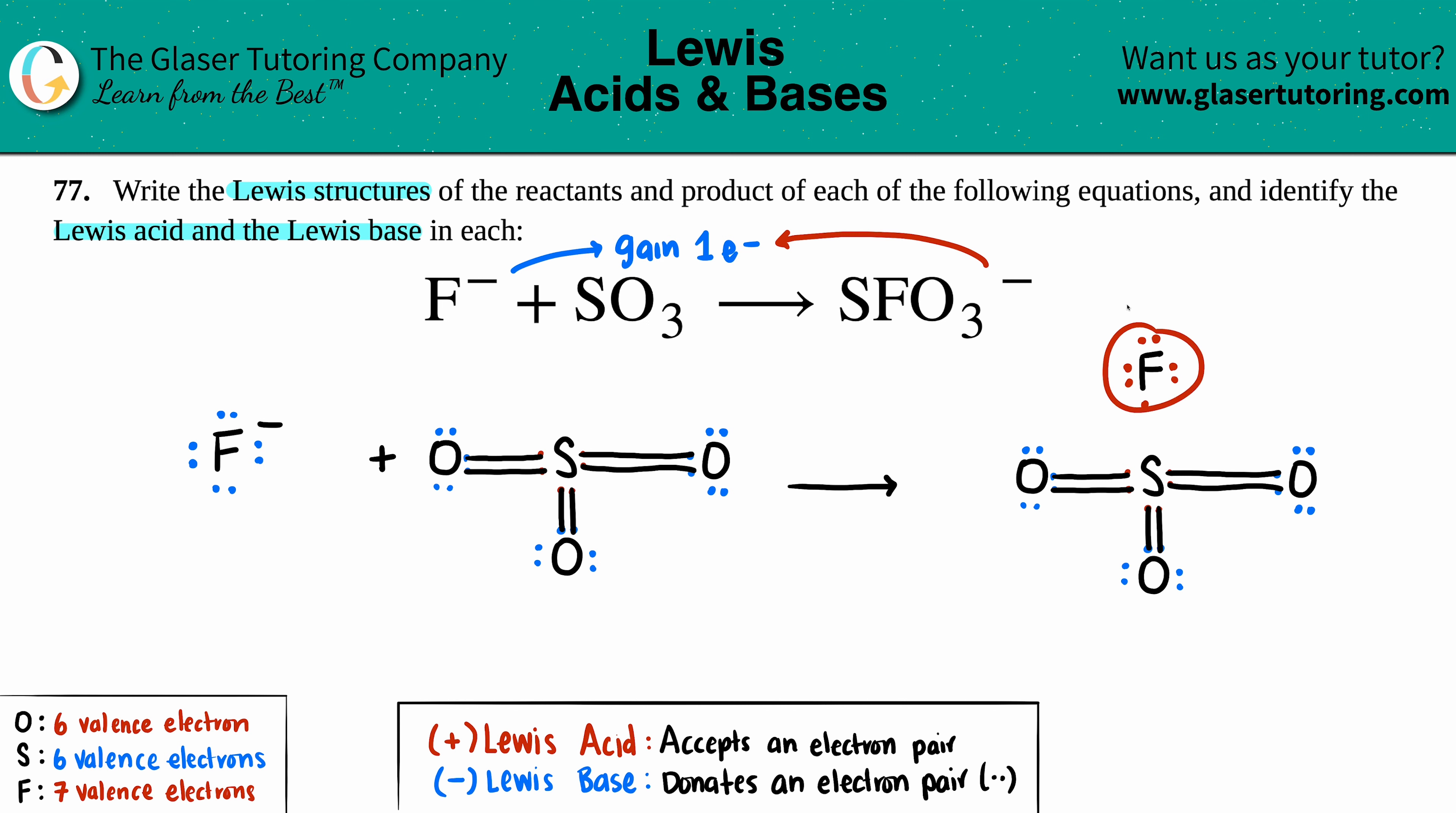Now pause for a second and say to yourself, 'Wait a minute, this is the same as this, and this is the same as this.' Well yeah, that's how Lewis acids and Lewis bases work. The base will come and try to donate its electron pairs to the acid to make the bond. Now the closest electrons that's going to work is these in the picture, right?